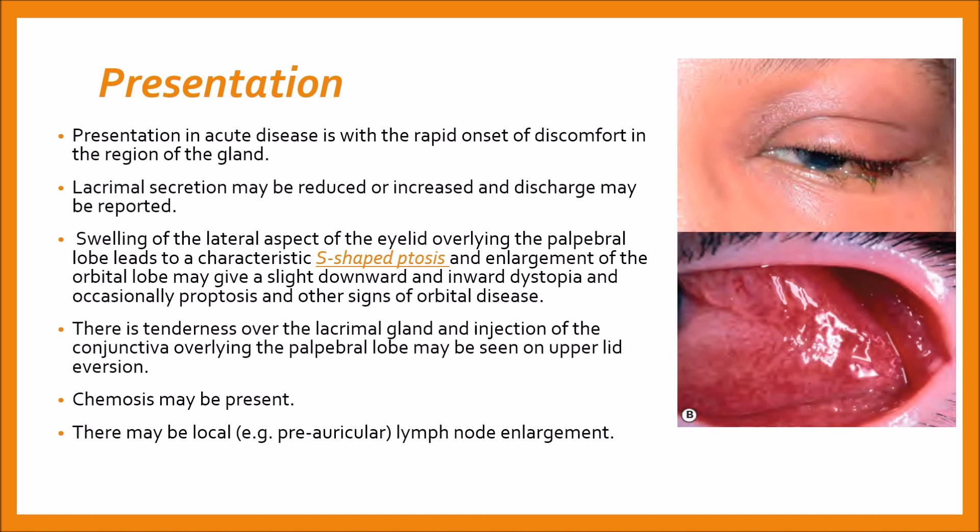There is tenderness over the lacrimal gland, and injection of the conjunctiva overlying the palpebral lobe may be seen on upper lid eversion, as seen in the bottom picture. Chemosis may be present.